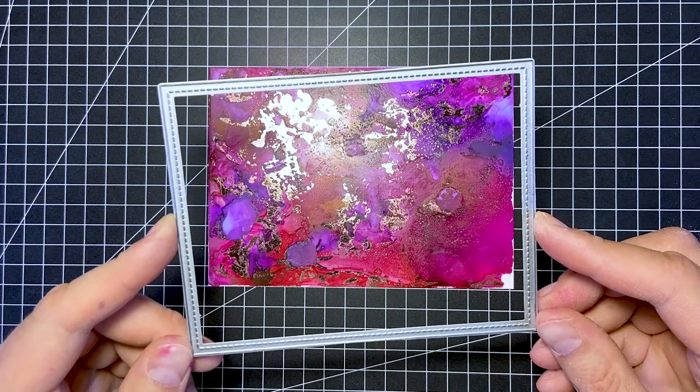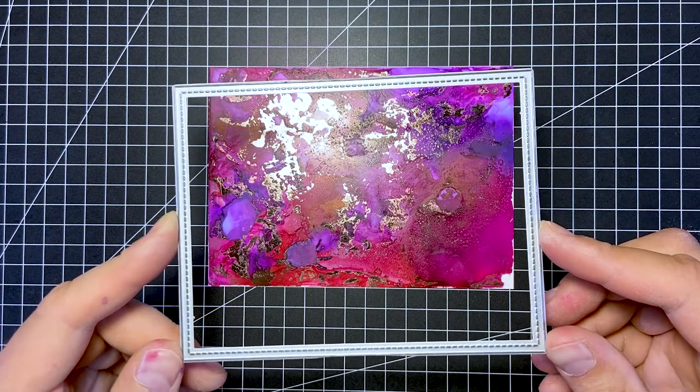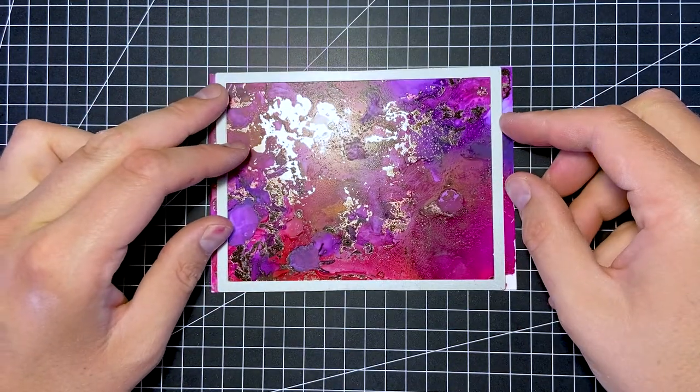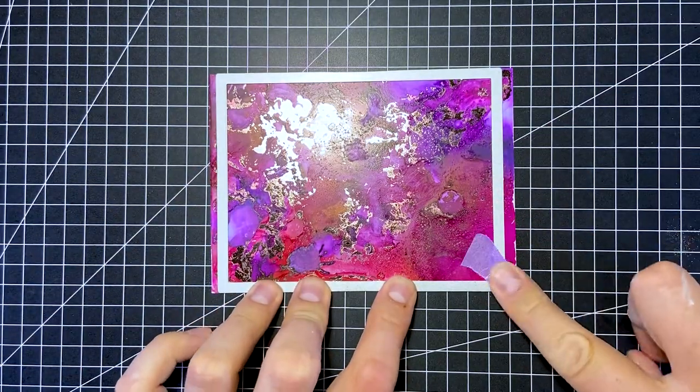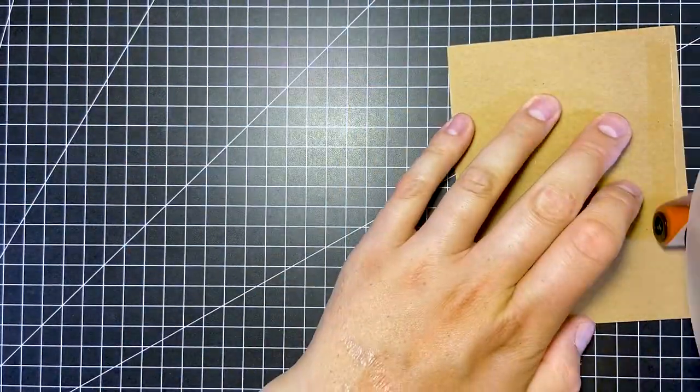Now it's time to cut the panel to size with my stitched rectangle die. Be aware, it can be a little difficult to cut through right away, so you might have to turn your rectangle and run it through the die cutting machine again. Also be aware of the fact that the alcohol ink can leave some marks on your die. Those can be easily cleaned off with some rubbing alcohol, but be sure to do that before you ruin another project with it.